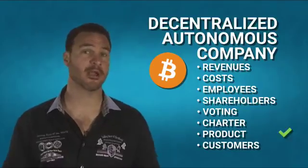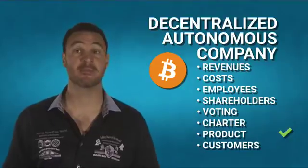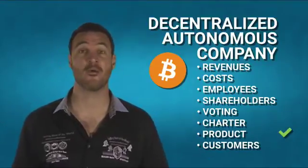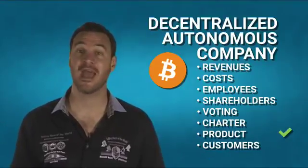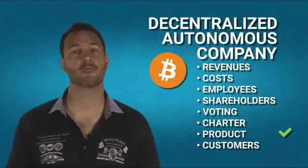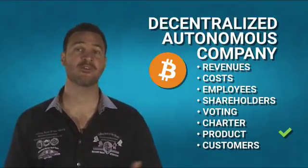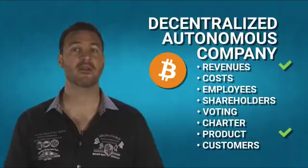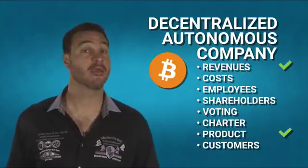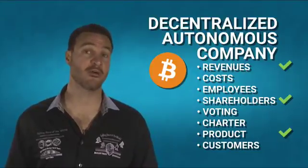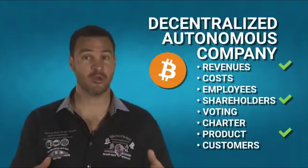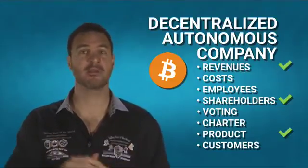Bitcoin has a product — it's a payment service. It competes with banks, Visa, PayPal, Western Union, and others for sending payments from one party to another all around the world. It has revenues: Bitcoin charges small fees on some transactions. Bitcoin has shareholders — the shareholders are you and I, the people who actually own Bitcoin.